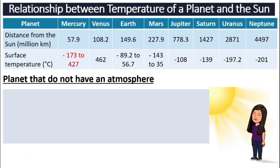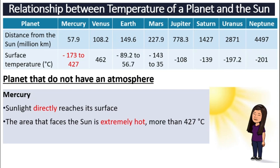We will look at the planets that do not have an atmosphere first. That is Mercury. Mercury is the only planet that does not have an atmosphere. That means Mercury is almost like it is standing in front of the sun naked — it does not have anything to protect it, no jacket of atmosphere. So sunlight directly reaches the surface. The side facing the sun can go up to 427 degrees Celsius, while the darker face away from the sun is negative 173 degrees Celsius.